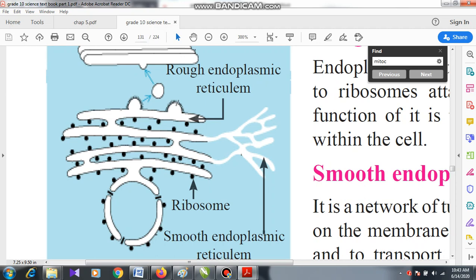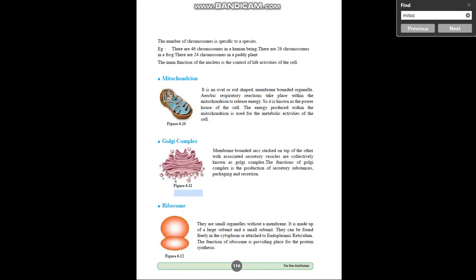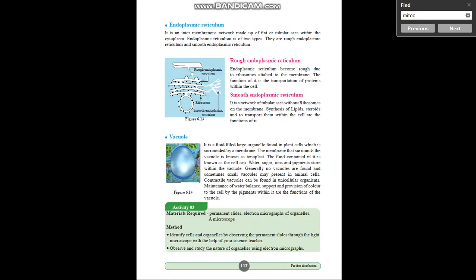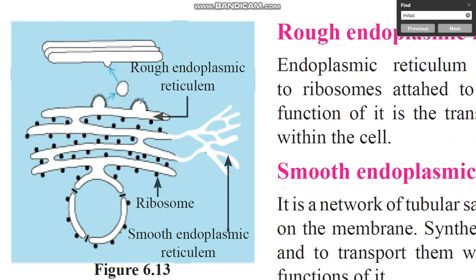Because ribosomes are present on the surface, the surface is rough — that's why it is called rough endoplasmic reticulum. Children can pause and draw this diagram. Note that a circle shown in the diagram is the nucleus, and the surface of the nucleus is attached to the rough endoplasmic reticulum — mark that as well.